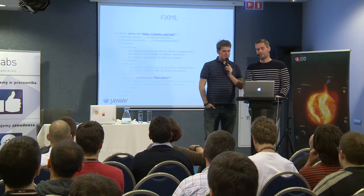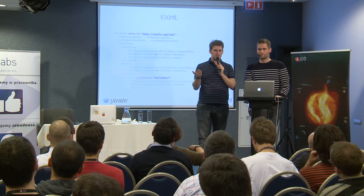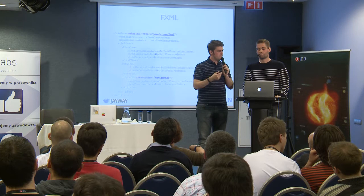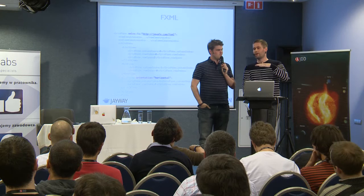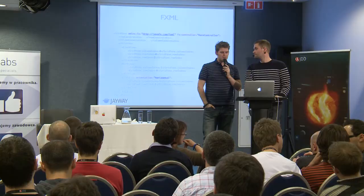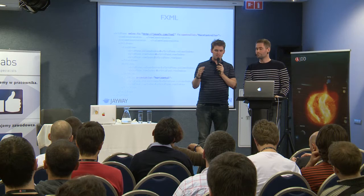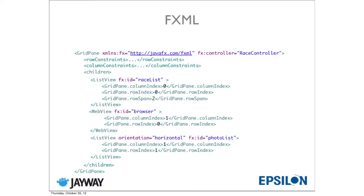Now, how do we connect the FXML to our code? We declare a controller in FXML using fx:controller with the name of your controller class. We also add IDs to the components: raceList, browser, and photoList — so we know which is which. Now we're done with the FXML.